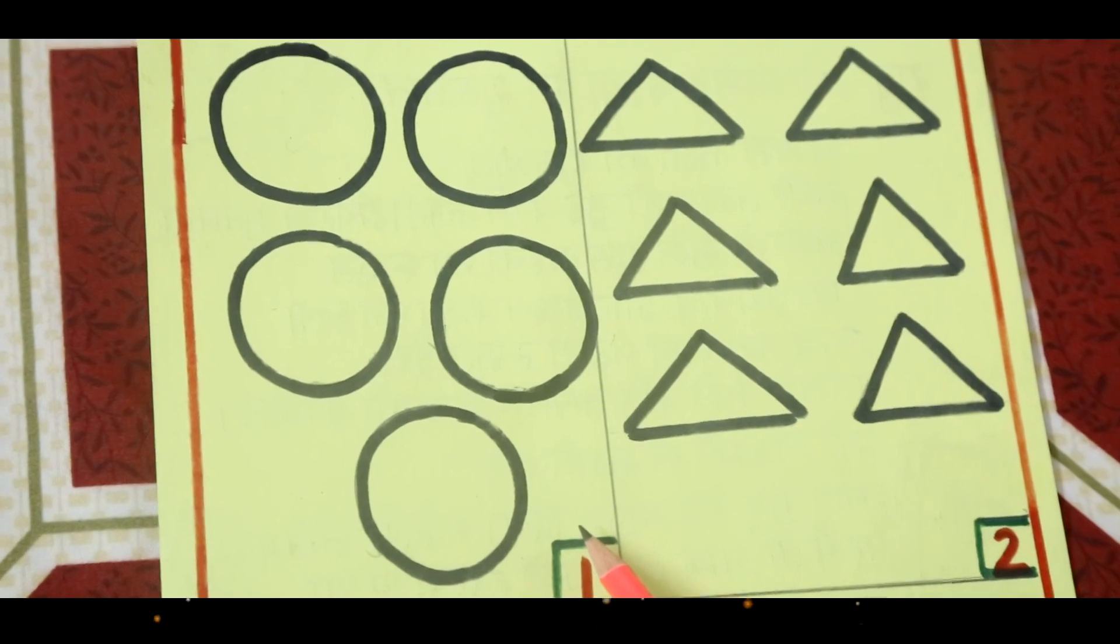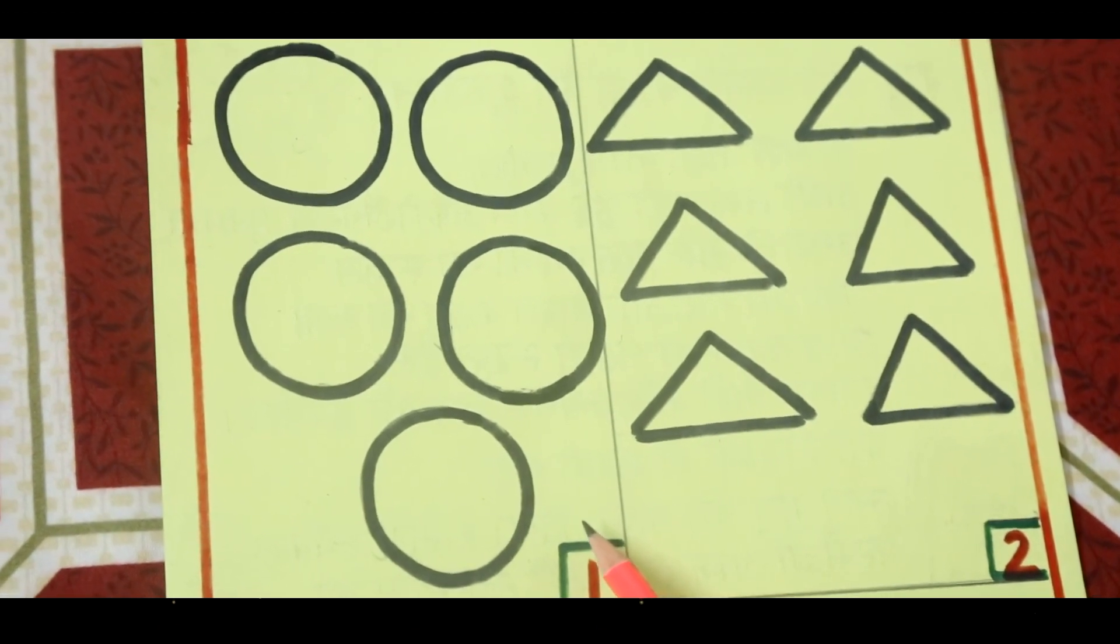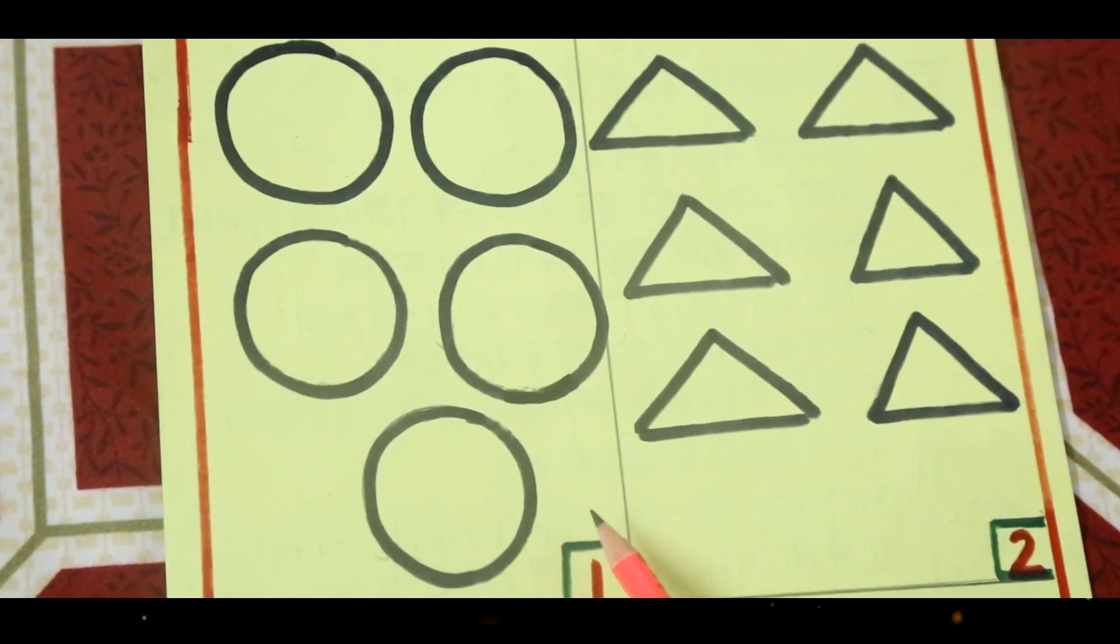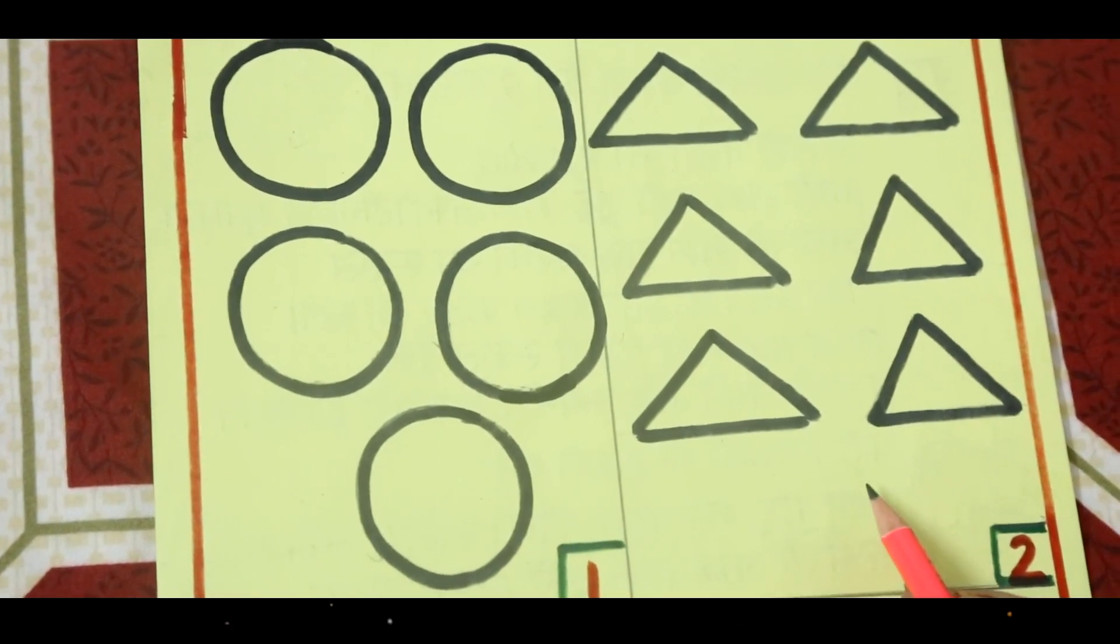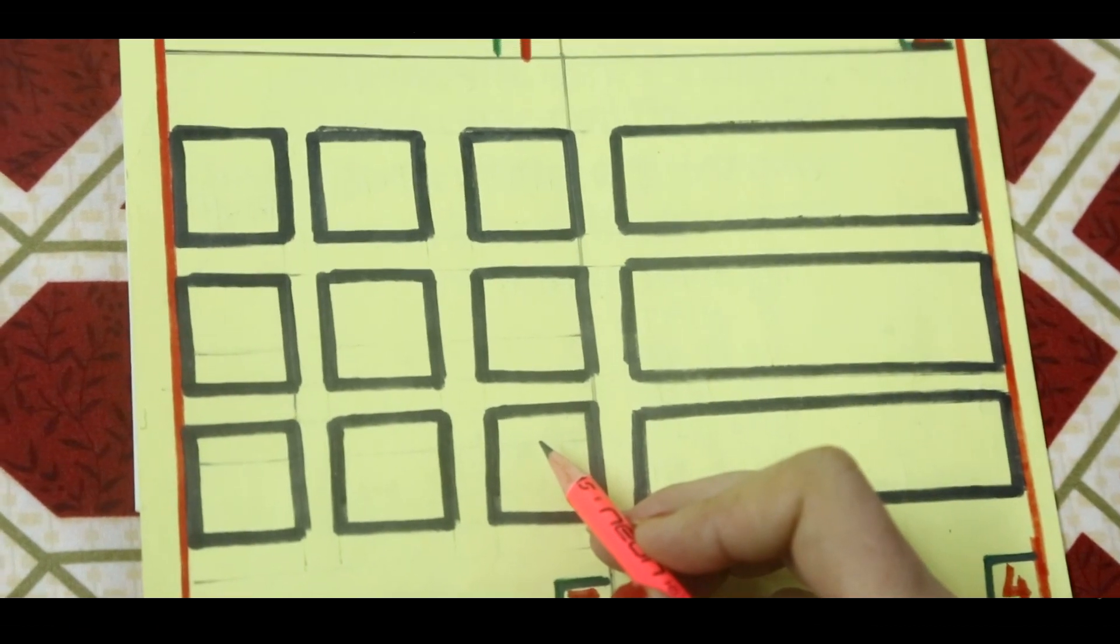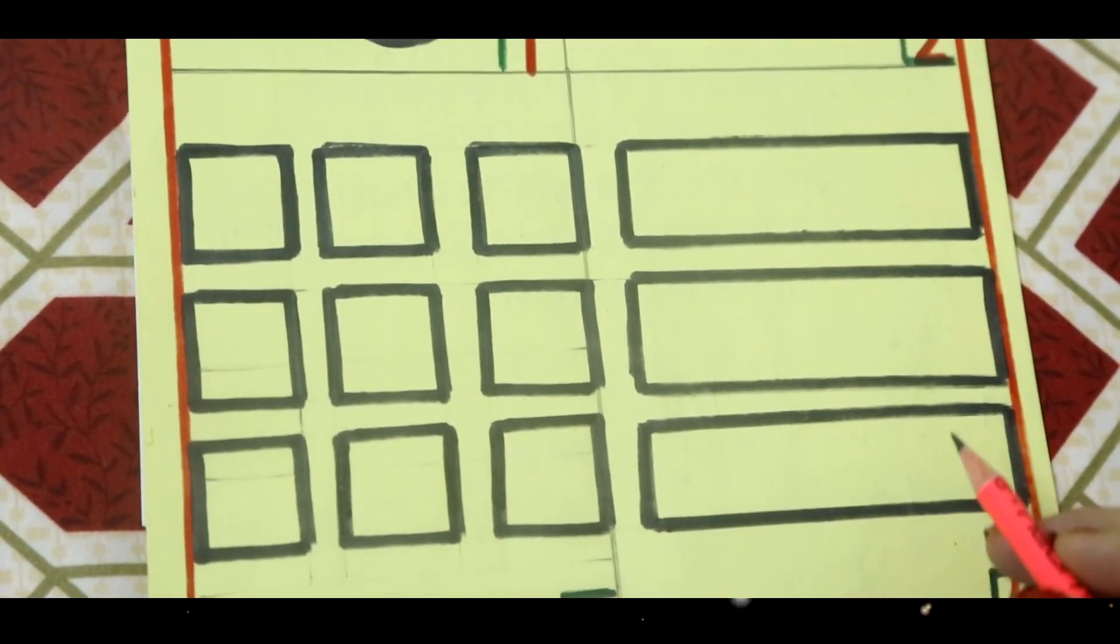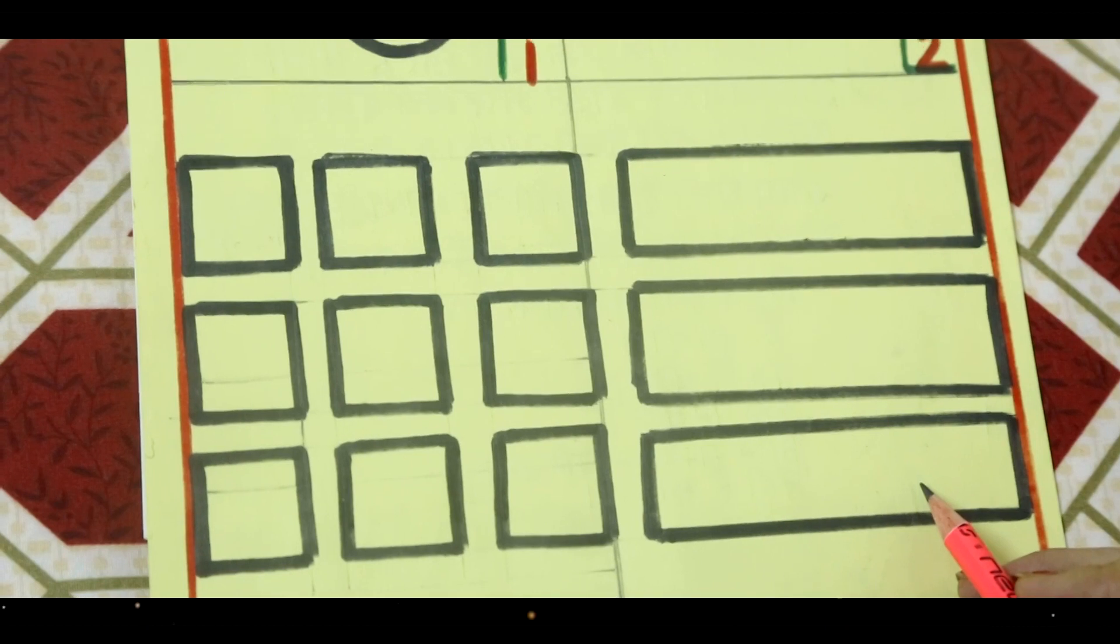Now, just revise the numbers in your mind. How many circles? Five. How many triangles? Six. How many squares? Nine. How many rectangles? Three.